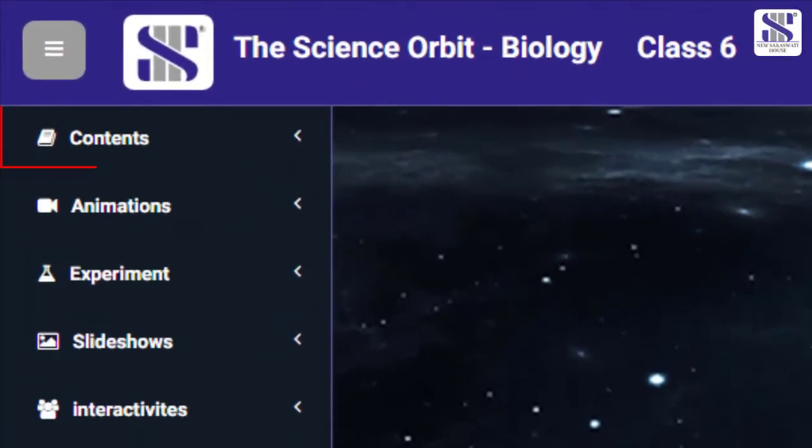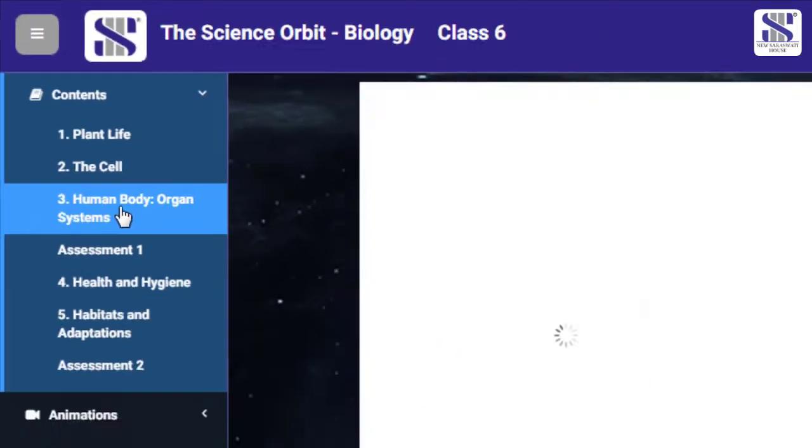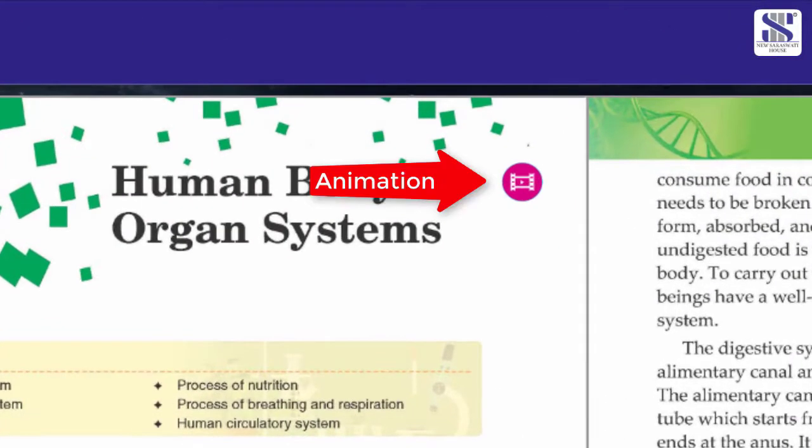Click on the Contents page to get a drop-down of the lessons inside the book. Click on the lesson that you wish to teach. Lesson opens. Click on the icon of the lesson to get the animated lesson.